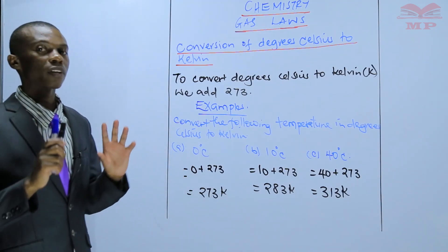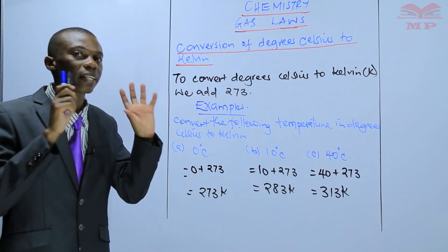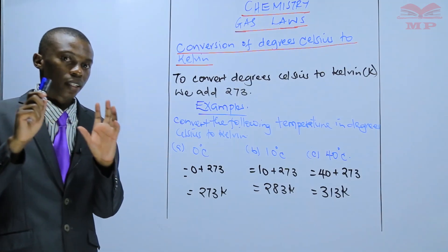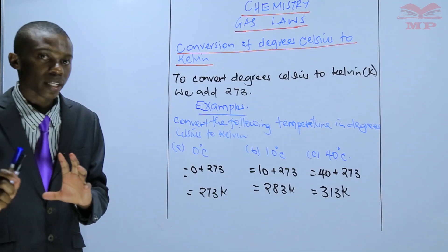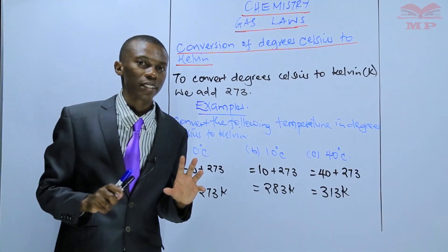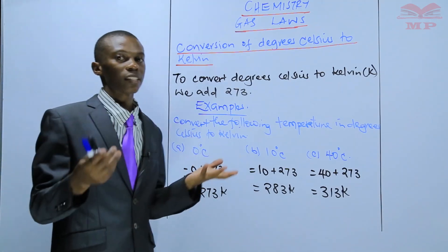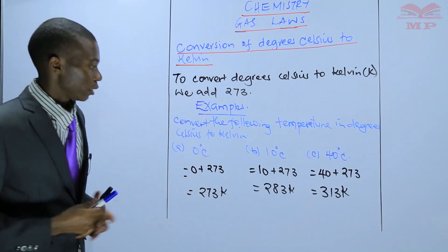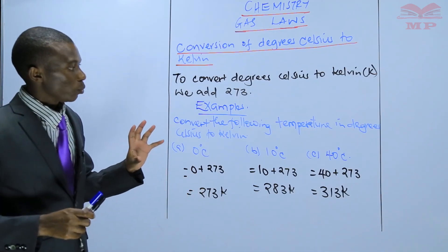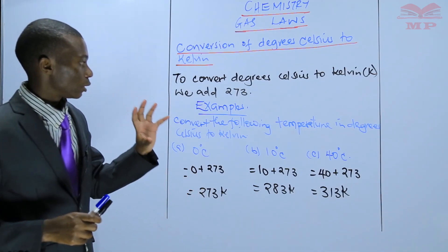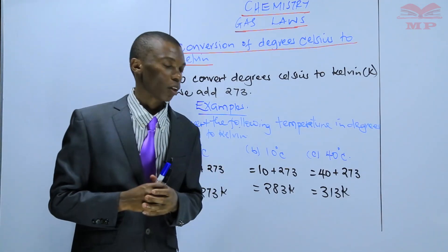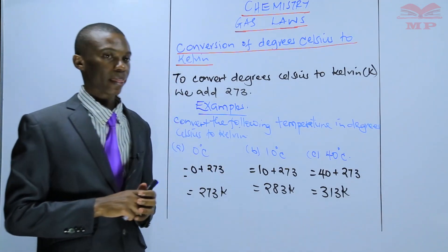So always remember that if we are given temperature in degree Celsius, we convert it to Kelvin by adding 273. I hope that is a simple task. I want to give you some more examples on the same.